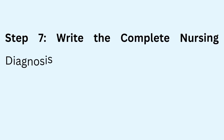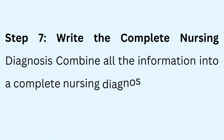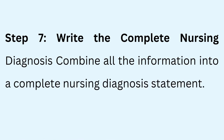Step 7: Write the complete nursing diagnosis. Combine all the information into a complete nursing diagnosis statement. It should follow the format: nursing diagnosis related to etiology as evidenced by defining characteristics. For our example: impaired gas exchange related to alveolar consolidation and inflammation secondary to bacterial pneumonia, as evidenced by increased respiratory rate, decreased oxygen saturation, productive cough, and auscultation findings of crackles.